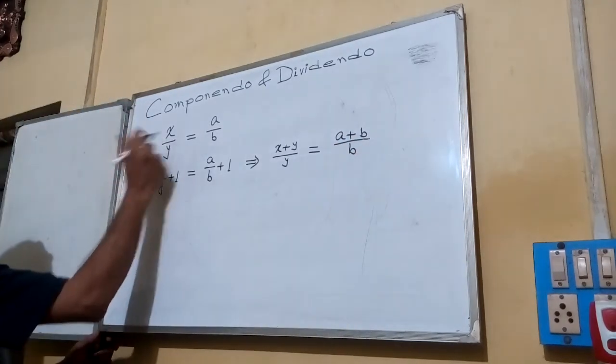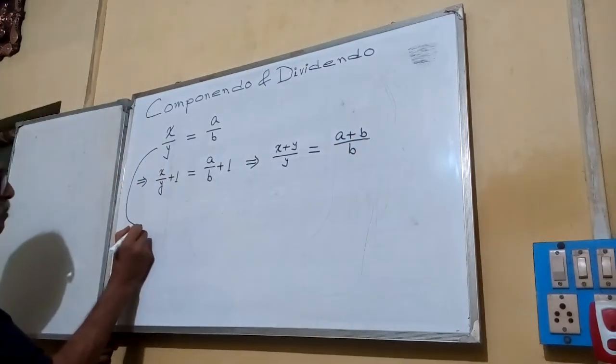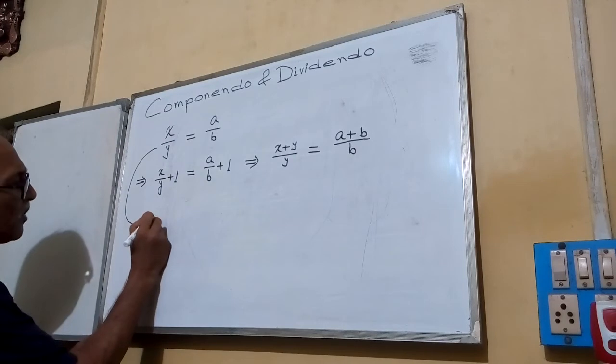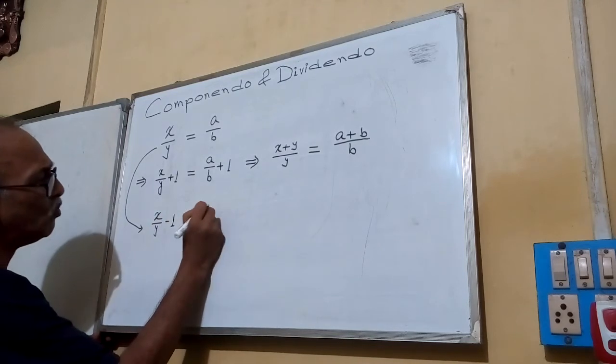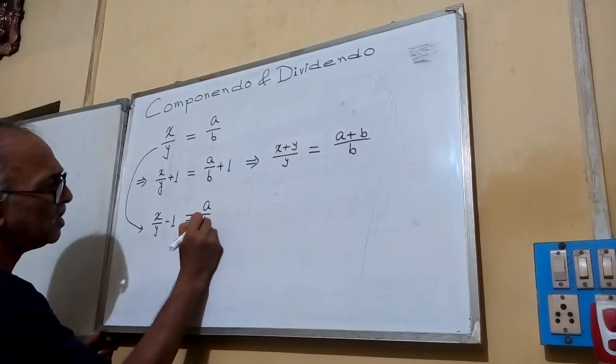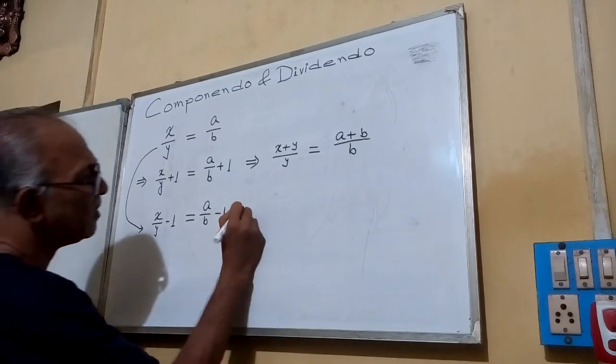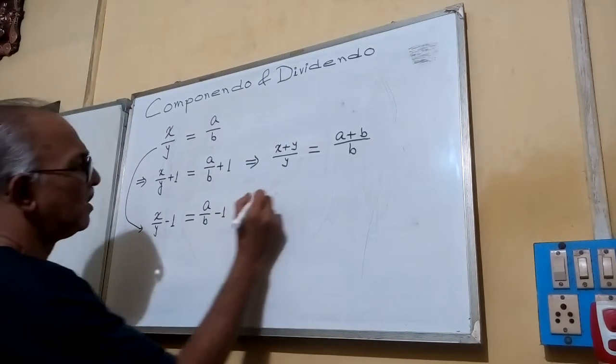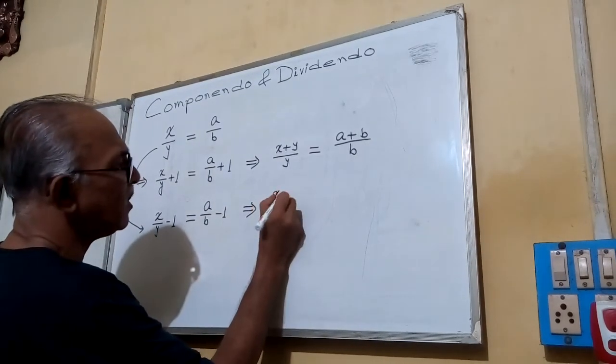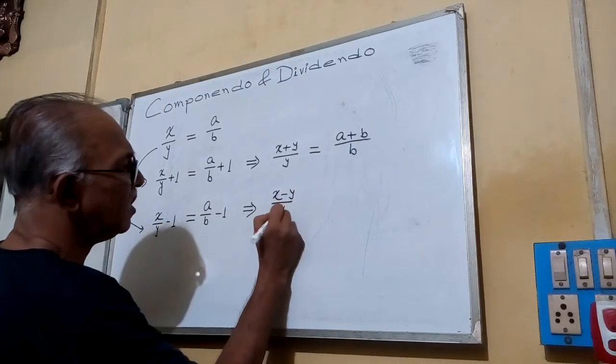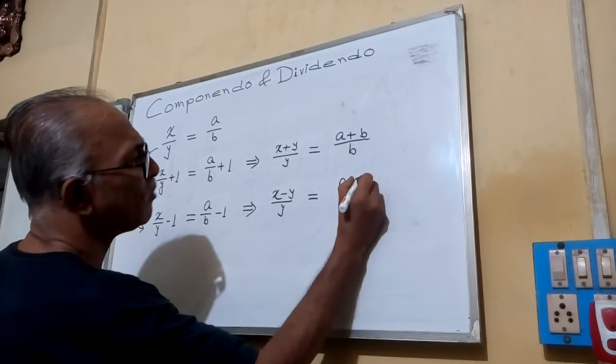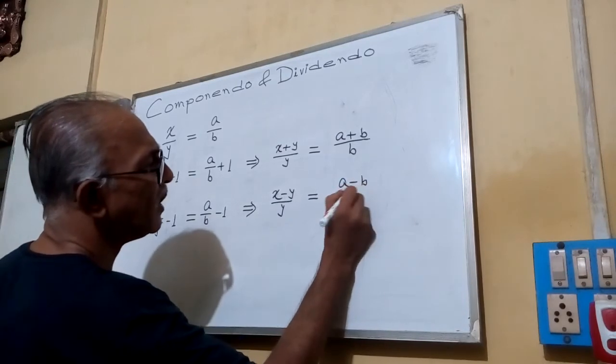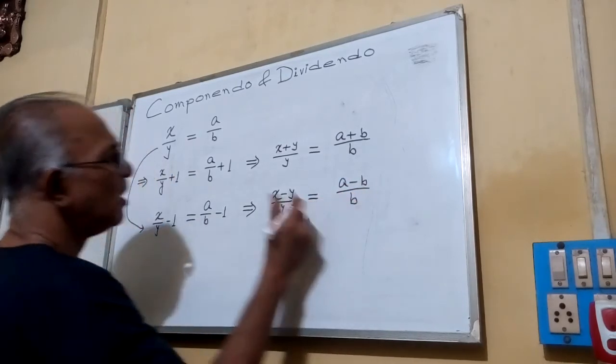Again, from here, if we are subtracting one from both sides, X by Y minus 1 equals A by B minus 1. This implies X minus Y by Y equals A minus B by B.